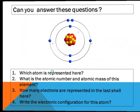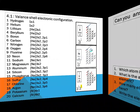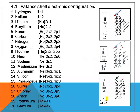Now, are you able to answer this question? Observe the diagram. Question number one: which atom is represented here? We count the number of electrons: 1, 2, 3, 4, 5, 6, 7. Since the atomic number is 7, this is nitrogen.